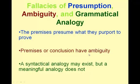The last set of fallacies we'll study concern three types: fallacies of presumption, fallacies of ambiguity, and fallacies of grammatical analogy. Fallacies of presumption have premises that presume what they purport to prove. Fallacies of ambiguity have premises or a conclusion that contain ambiguity. Fallacies of grammatical analogy have a syntactical analogy, but the meaningful analogy does not exist.